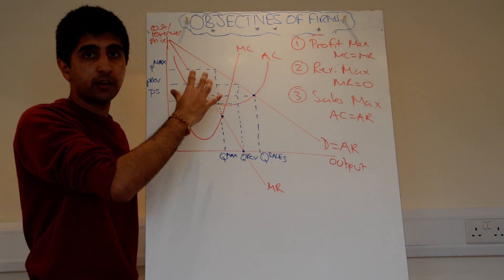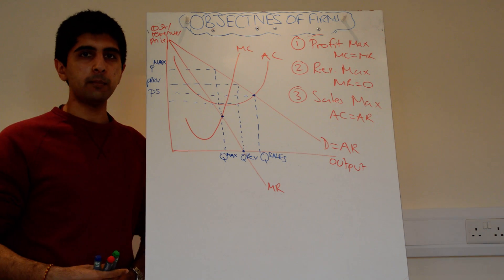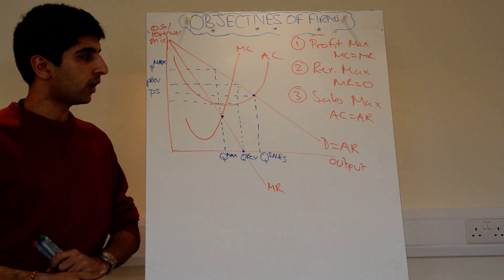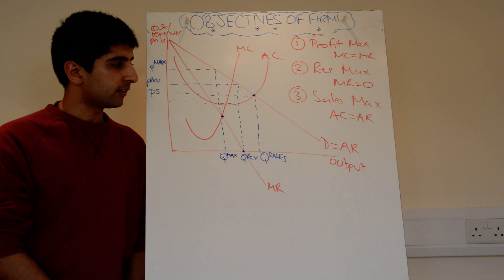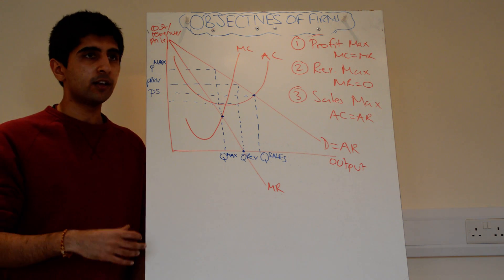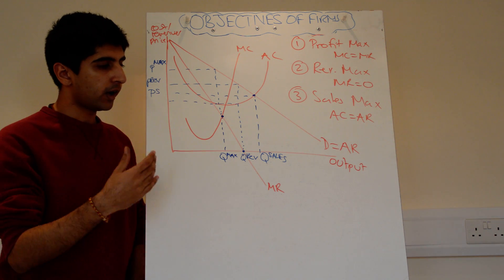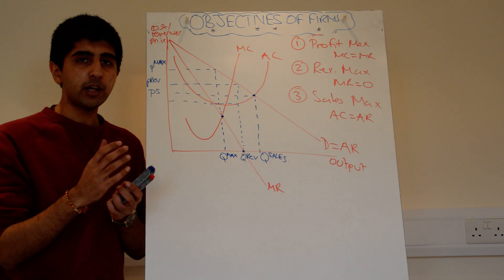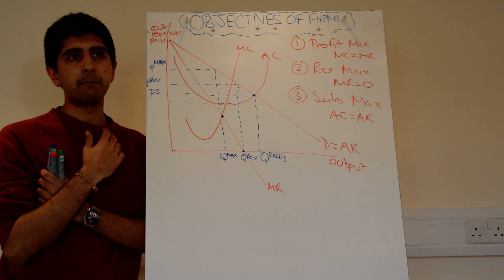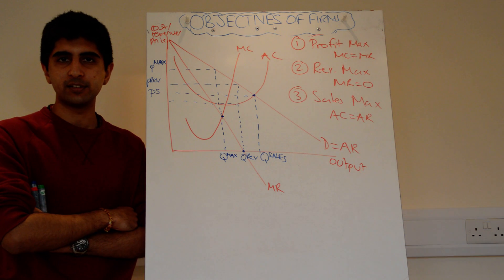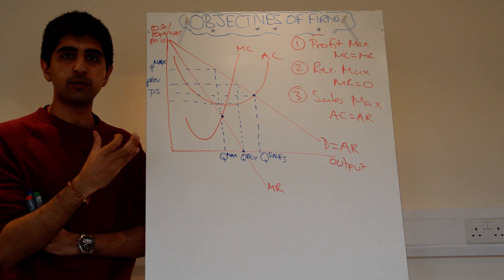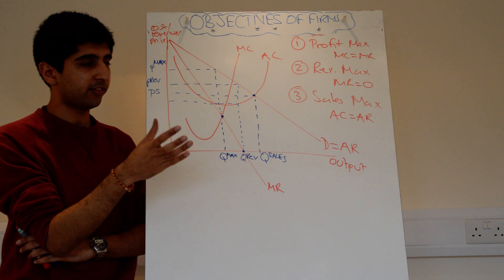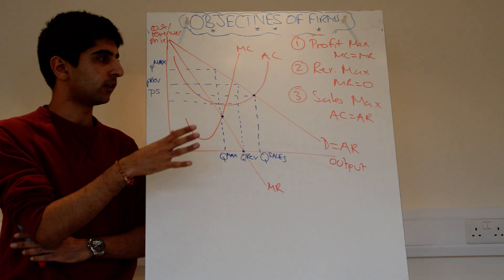We can't really show profit satisficing on the diagram because that level of profit is very dependent on the specific firm. There are also other objectives not shown — maybe public sector firms whose main objective is simply to provide a social service and provide output at the lowest possible price. Network Rail is a good example: provide the greatest amount of rail track possible at the lowest possible price, because it's a socially responsible thing to do — forget revenues and profits.